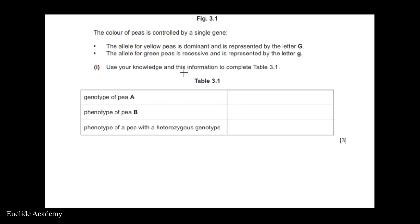We need to complete table 3.1. The table asks for the genotype of Pa, the phenotype of Pb, and the phenotype of a Pa with a heterozygous genotype.